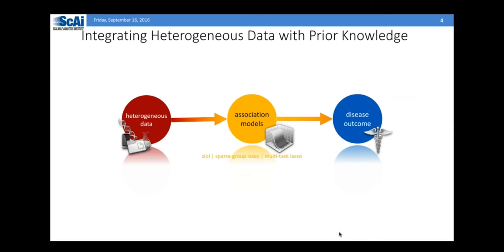There are so many computational methods developed to do the association study, demonstrated with many diseases including cardiovascular. Typically, people take mixed data, run an association study model, and correlate that with the disease outcome. LASSO has been one of the popular methods, and those are variations of different LASSO methods — they run some sort of regression model to fit the parameters.